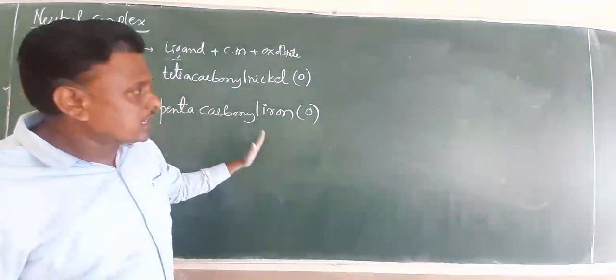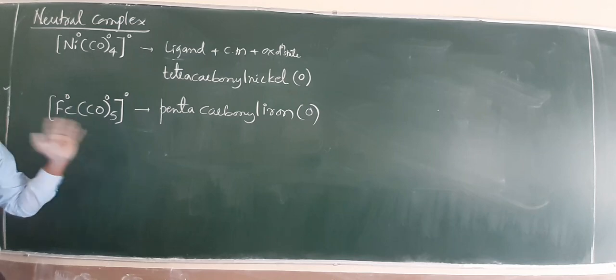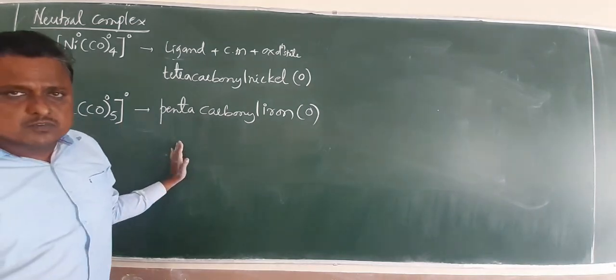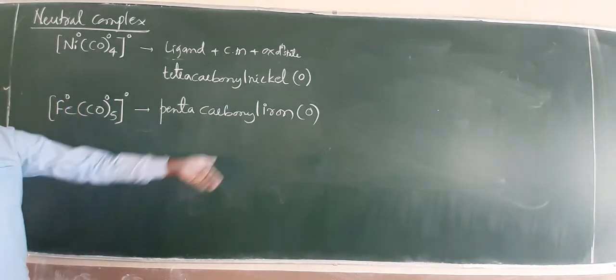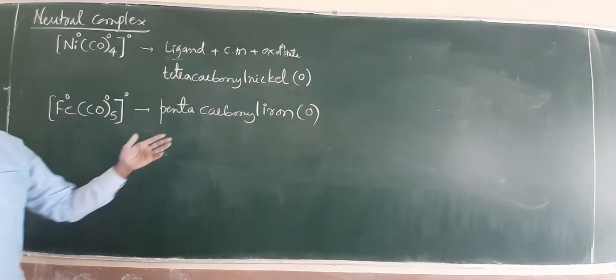Pentacarbonyl iron, which is example of neutral ligand. Neutral ligand must be ligand, central metal, oxidation state. This is very simple story mentioned in our NCERT, cationic ligand, anionic ligand, and neutral ligands.